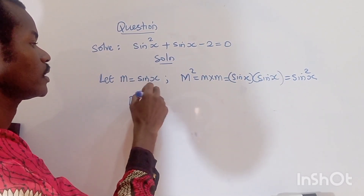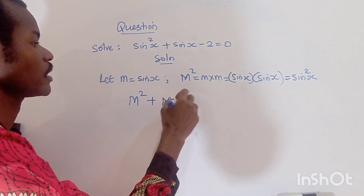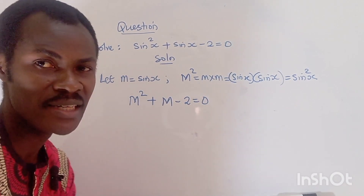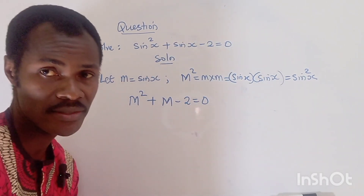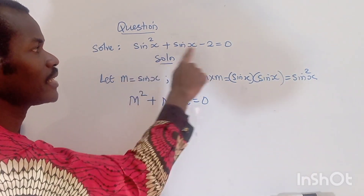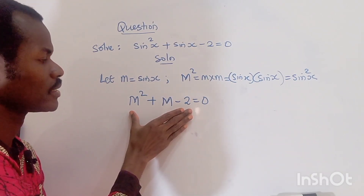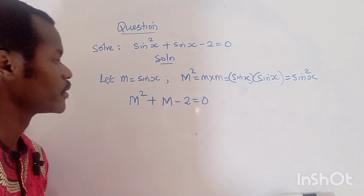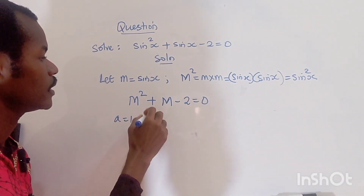Our equation becomes m squared plus m minus two equals zero. We can see from this that it is factorizable, so let's factorize and then replace m back with our sine function.